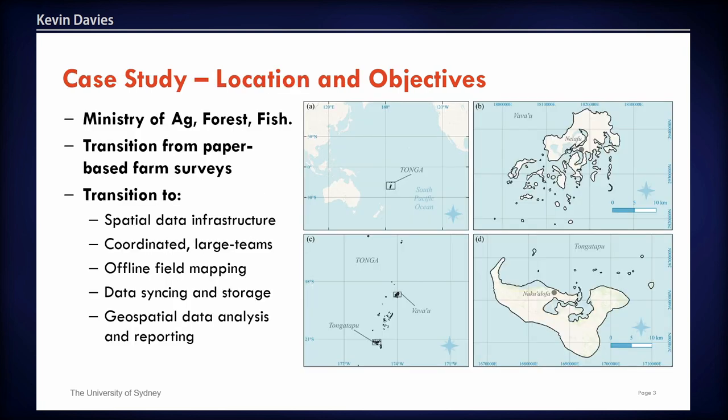The case study I'm going to talk about is in Tonga, where we worked with the Ministry of Agriculture, Forestry and Fisheries. We identified a need to transition from paper-based crop surveys to having spatial data infrastructure coordinated with large field teams collecting data, the ability to map farm systems offline and then data sync and store that data in a central location, and of course to do geospatial data analysis and reporting.